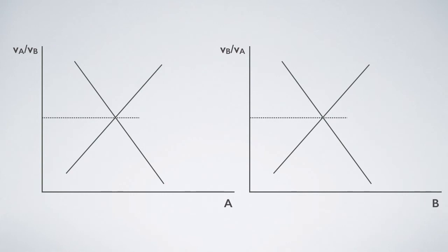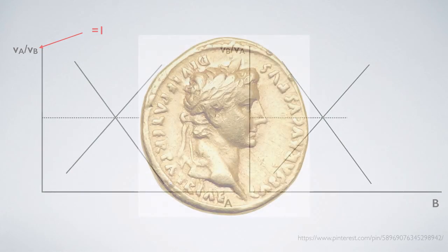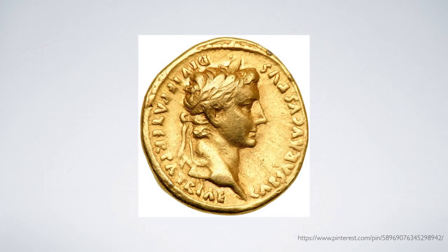To solve for the price of A, you may set the price of B to 1. This is the numéraire solution to the invalid dichotomy problem.